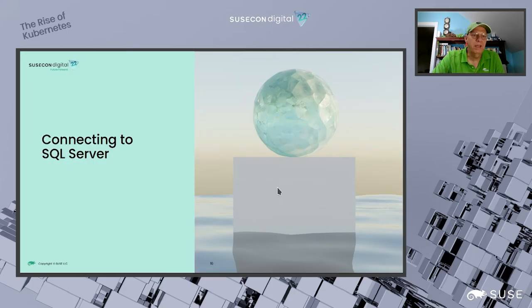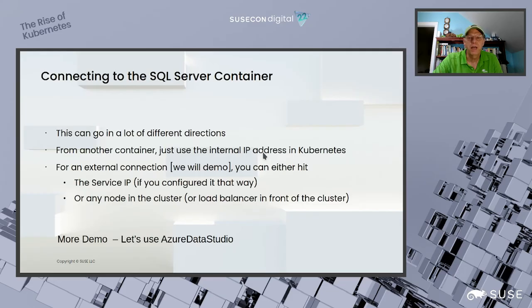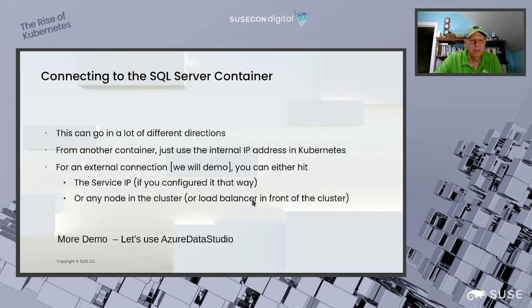Now let's look at how to connect to SQL Server. Since I deployed with NodePort as my service, that's how I'll connect — it makes the most sense for my home lab. If you were connecting from another container inside the Kubernetes cluster, which is a typical scenario, you could use the internal IP address. You could also create a service IP, build an ingress, or use a load balancer in front of the cluster. For me, I'll just pick one of the cluster's IP addresses and use NodePort.